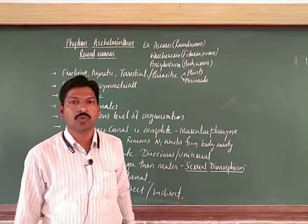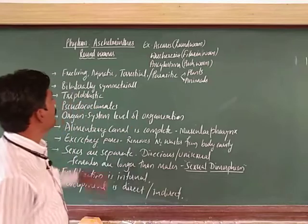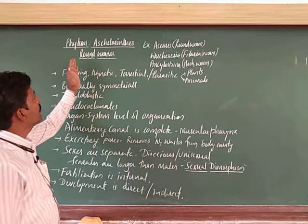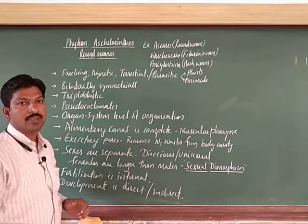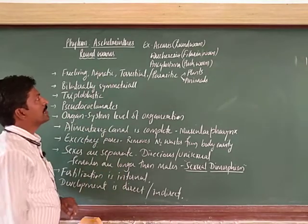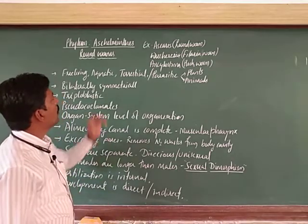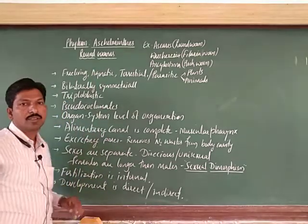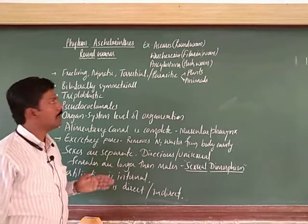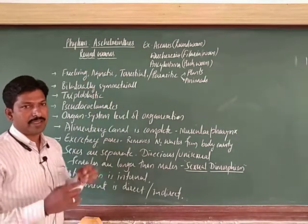Hello students. In this video, we will discuss the general characters of phylum Aschelminthes. This is the fifth phylum we consider. The members belonging to phylum Aschelminthes are commonly called roundworms because the body is cylindrical, tapering at ends.